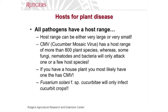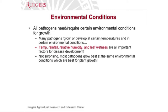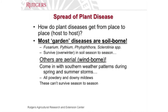All pathogens require certain environmental conditions to develop. For home gardeners, you almost have to become mini meteorologists — you have to pay attention to the weather. The most important things to remember are temperature, rainfall, relative humidity, and leaf wetness — all important factors for disease development. Most plant pathogens develop at the same temperatures ideal for plant growth. Most of your garden diseases are going to be soil-borne, and once they're in the soil, they're going to be there for a very long time. That's why crop rotation is so important.